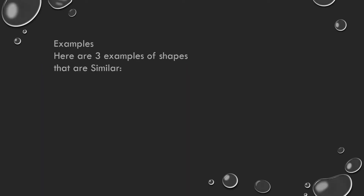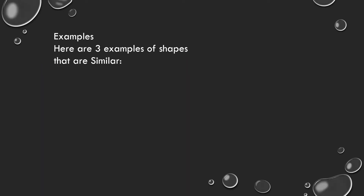Now I will show you some examples of similar figures. In the first figure, you can see two triangles. The shape of the two triangles is the same, but the size differs. So we can see there is similarity when the figures are resized. If the size differs but the shape is the same, we can say the two figures are similar.